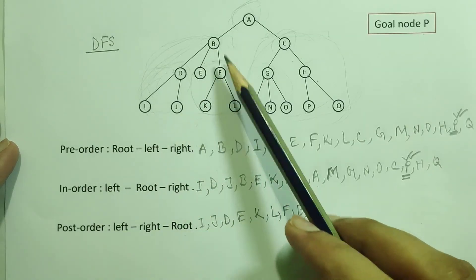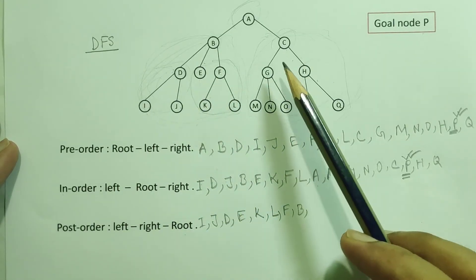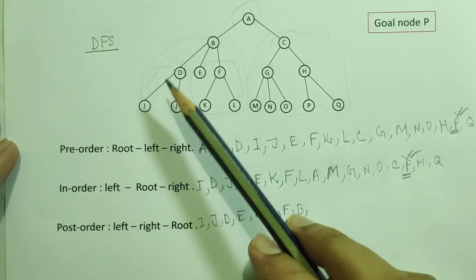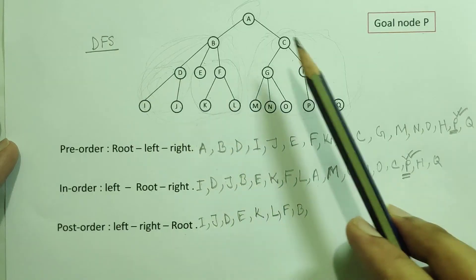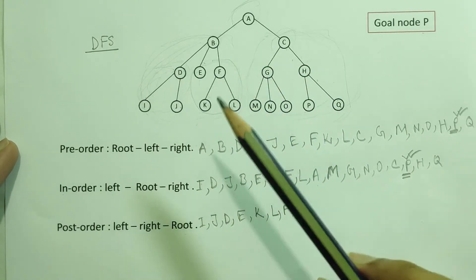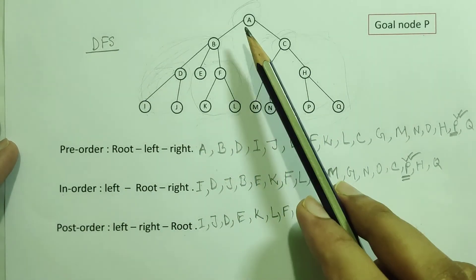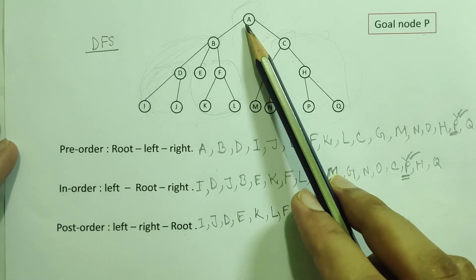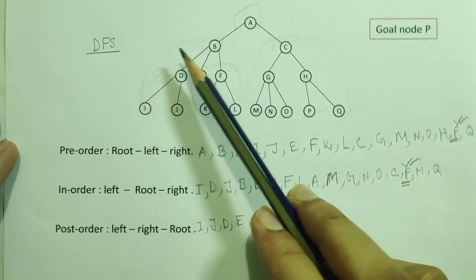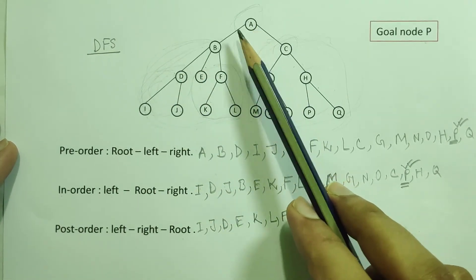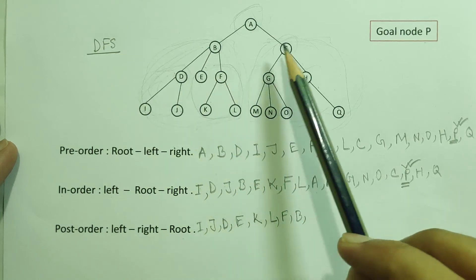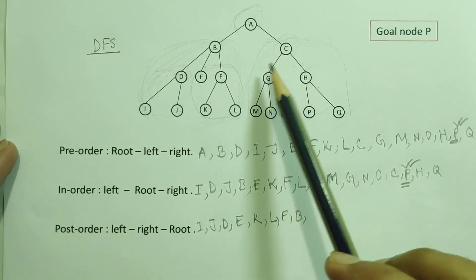In post-order, you go left on the record, right on the record, then root. The first time: left, right, root. Post-order means the root comes last — you go to the left, then the right, and finally the root.